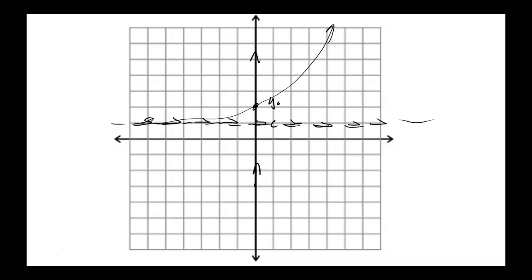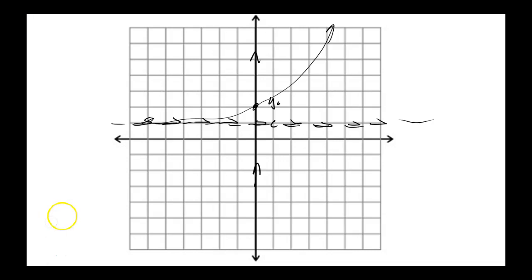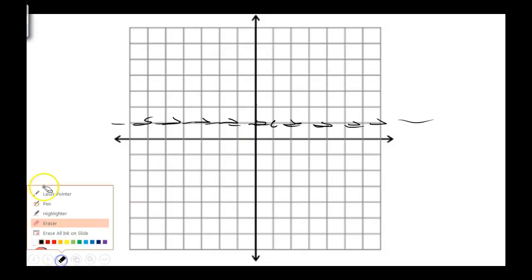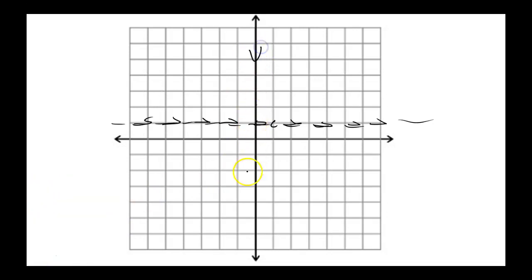Going through the cases more carefully: if your initial value y₀ is below c and both arrows point toward c, you have an asymptotically stable situation. If both arrows point away from c, it's unstable — a repeller in both directions. If one points in and one points out, it's semi-stable.